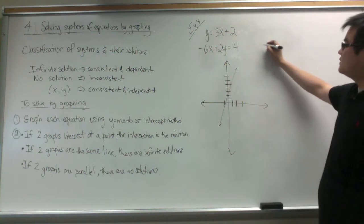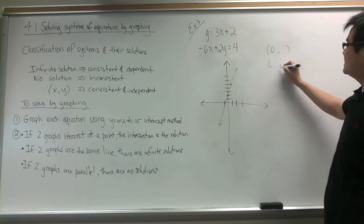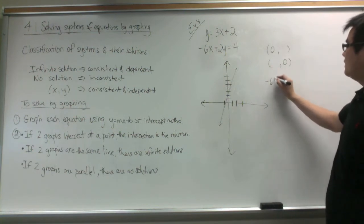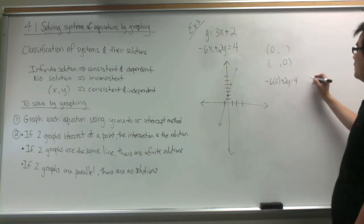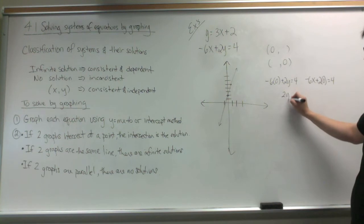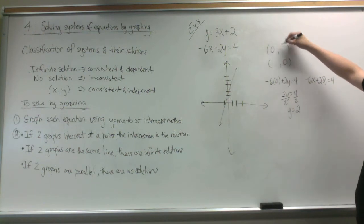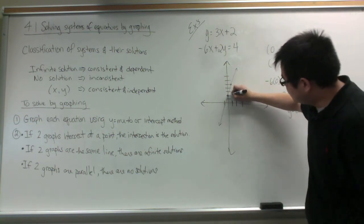To graph using intercepts, we let x equal 0 and find what y is, and then let y equal 0 and find what x is. For the first case, substituting 0 gives 2y equals 4; dividing by 2 gives y equals 2. So when x is 0, y equals 2 — that is actually the same point already graphed.